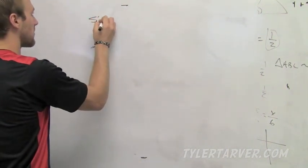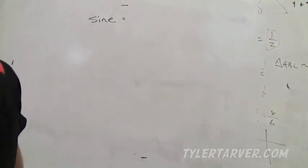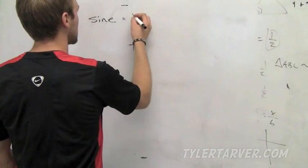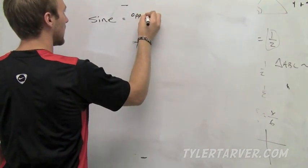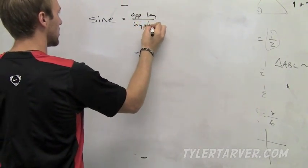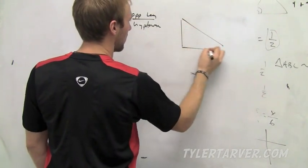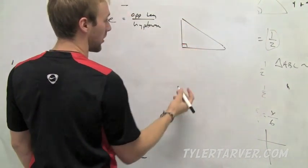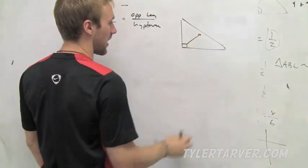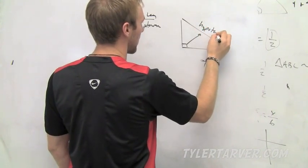There's sine. Sine is opposite leg over the hypotenuse. We got a right triangle. We always know where the hypotenuse is, correct? It's always opposite the right angle. It's the longest side, it's opposite the right angle, that's the hypotenuse.